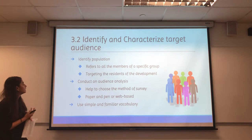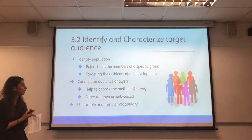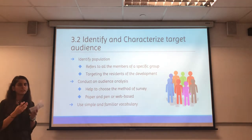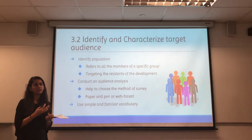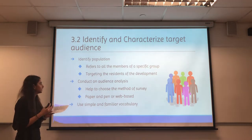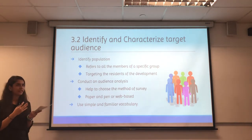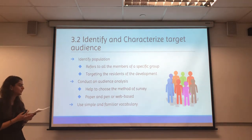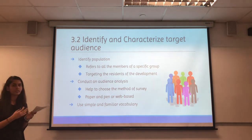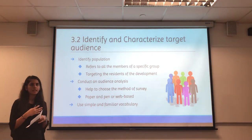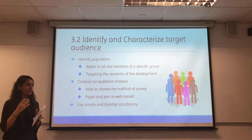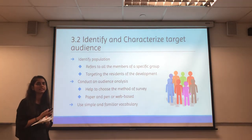After identifying the objective, they will need to identify the target audience and population. This population refers to all members of a specific group, derived from demographic, geographic location, and occupation. For this case, Orion developers are targeting the residents of the development. After identifying the population, they are required to conduct an audience analysis to characterise the respondents. This will help them choose the method of survey — either pen-and-paper or web-based. They should also use simpler and familiar vocabulary so that respondents will be able to understand the survey. The next step is to design the sampling plan.